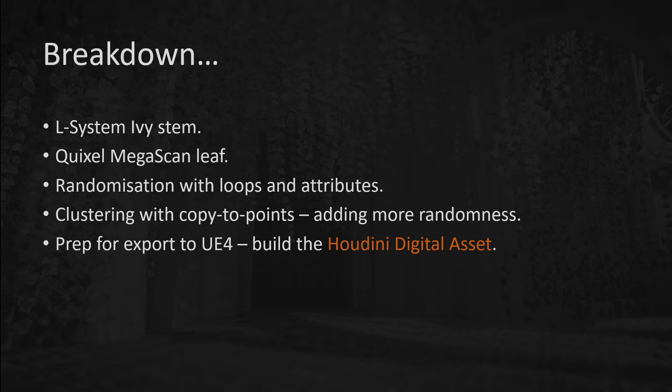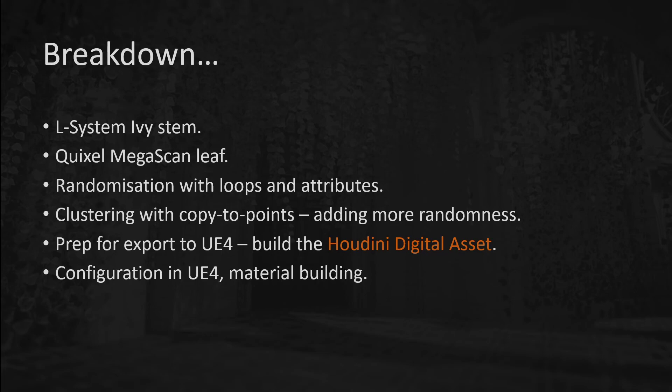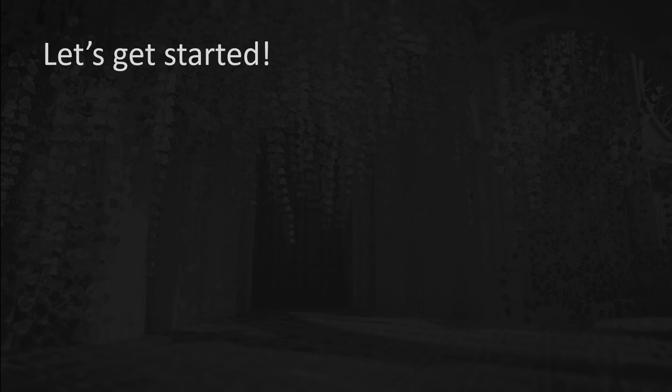After that, we'll take a look at some considerations before we export into Unreal Engine. We'll look at how we can build that digital asset and, using the Houdini Engine plugin, show you ways that we can move data very seamlessly between the two programs to really speed up asset placement in the game engine. Once we've done that, we'll jump into UE4 to do a little bit of material building, configuration of the assets when they come in, and we'll also look at the more traditional method of moving data backwards and forwards using FBX files.